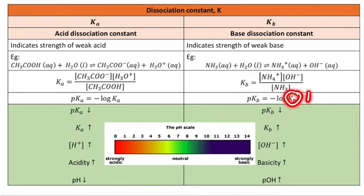When the value of pKb is low, the value of Kb will be high. The concentration of OH- increases, basicity also increases, and the value of pOH increases while the value of pH will decrease.